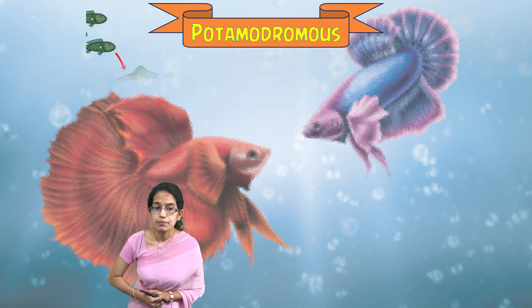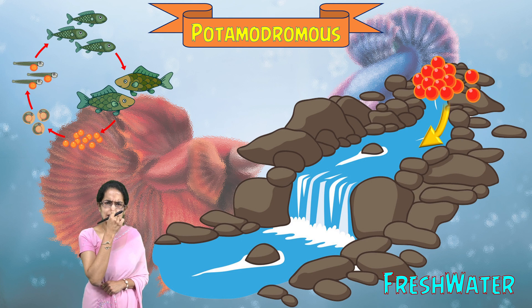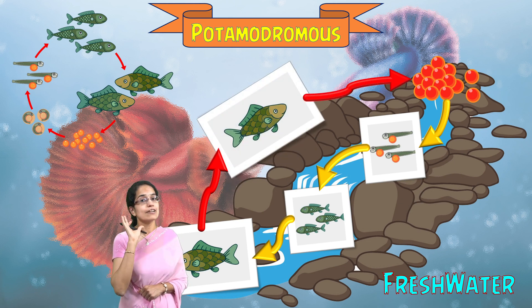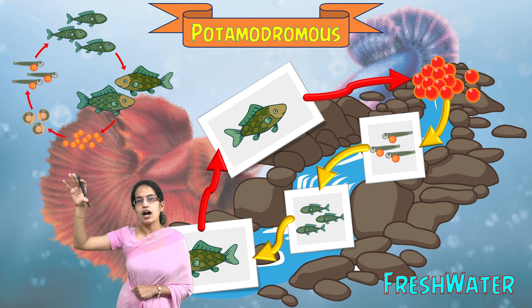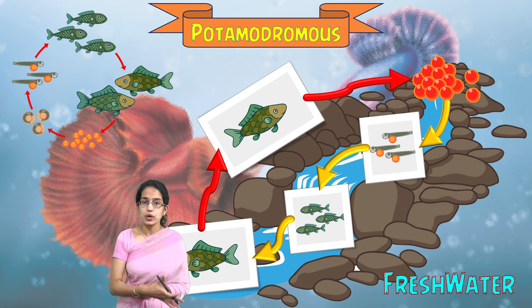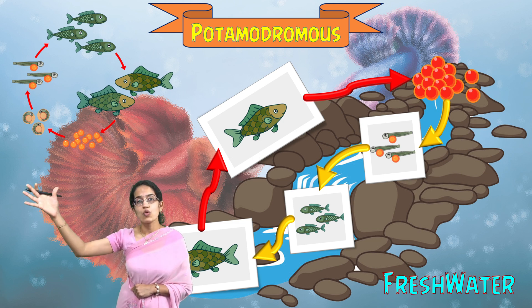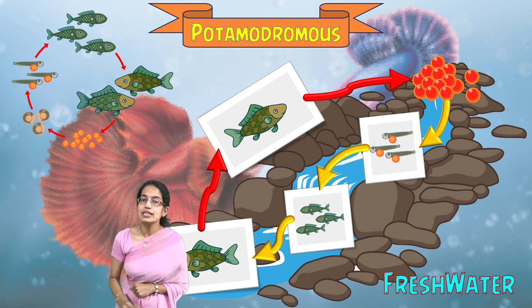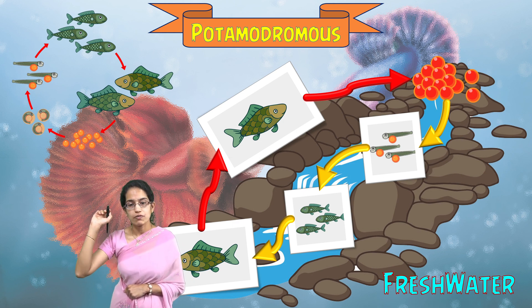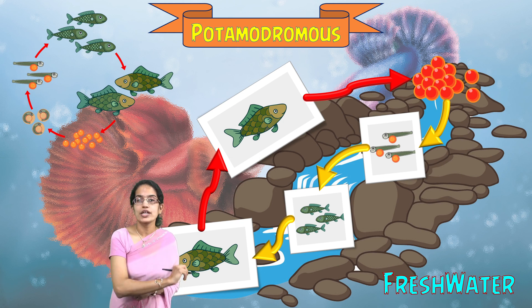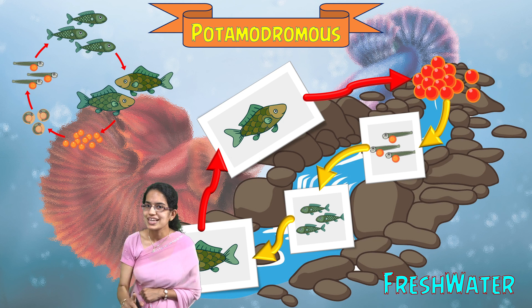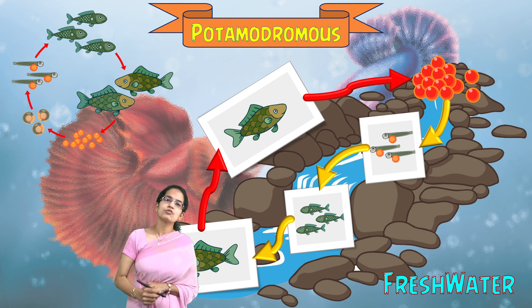The next important classification is Potimidromus. Potimidromus is similar to Anadromus, but don't confuse them — here, the whole life cycle is completed entirely within fresh water. They lay eggs in the upstream region, the eggs travel downstream with the current, and the fish mature into adults in the downstream region. The adults then migrate back upstream to lay eggs. There is no role of salt water at all — just upstream and downstream fresh water.